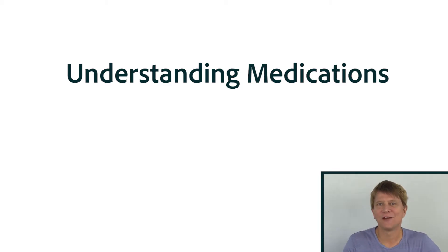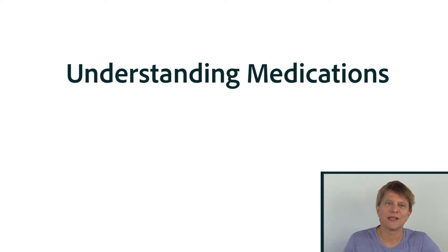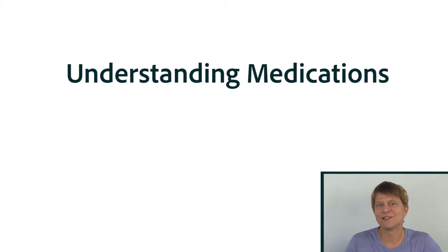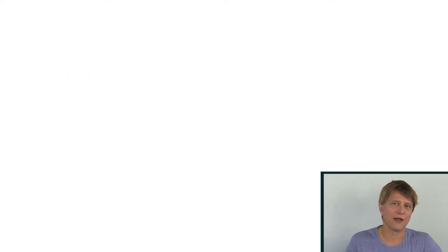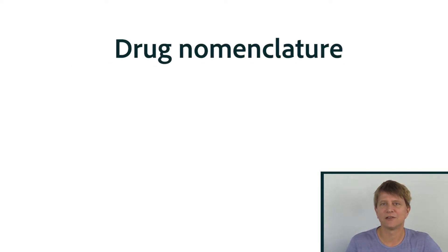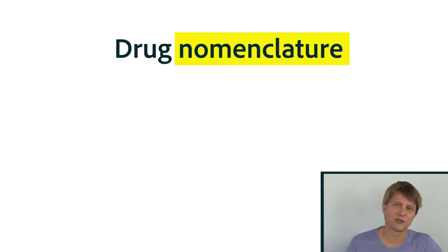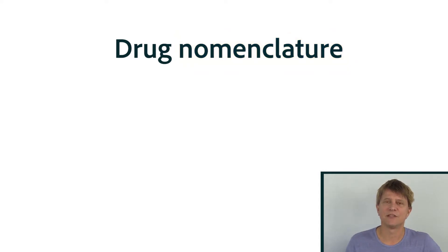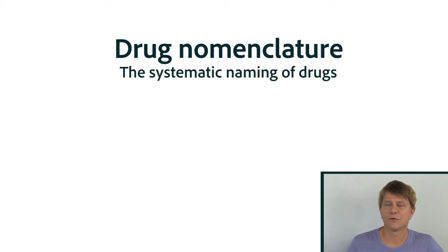Hi there and welcome back to Understanding Medications. In this chapter we're going to be looking at one of the specific types of opioids called loperamide. But before I get to the specific actions of loperamide, there's a number of things I'd like to talk about. The first of which has to do with nomenclature, or the naming of something — and specifically the nomenclature of medications.